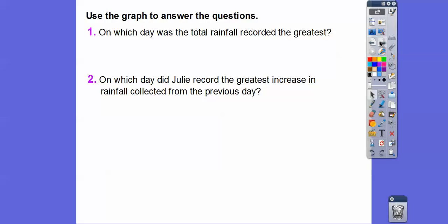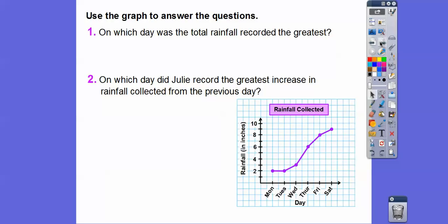So we're going to use the graph to answer the questions. On which day was the rainfall recorded the greatest? Was the total rainfall that recorded the greatest? The total rainfall is right up here. It's at that 9 inches right there. So on which day was that? It was on Saturday when it had the greatest total right there. Saturday with the rainfall of total of 9 inches.